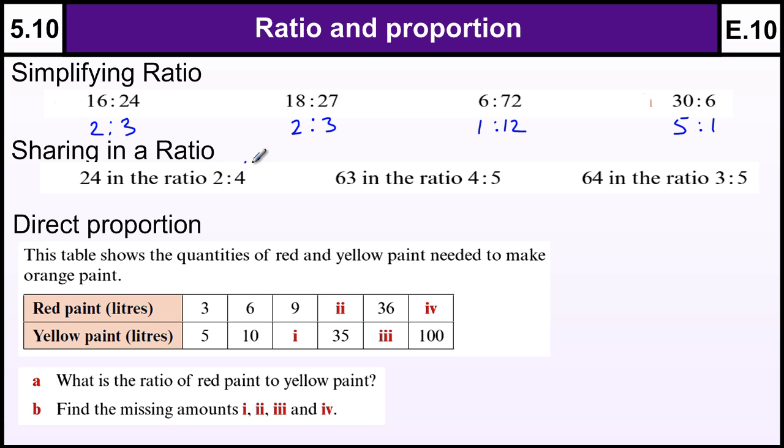ratios, so 2 plus 4 which is 6, divide the 24 by that total which gives you 4, and then you multiply each of these by that number to give you 8 and 16.